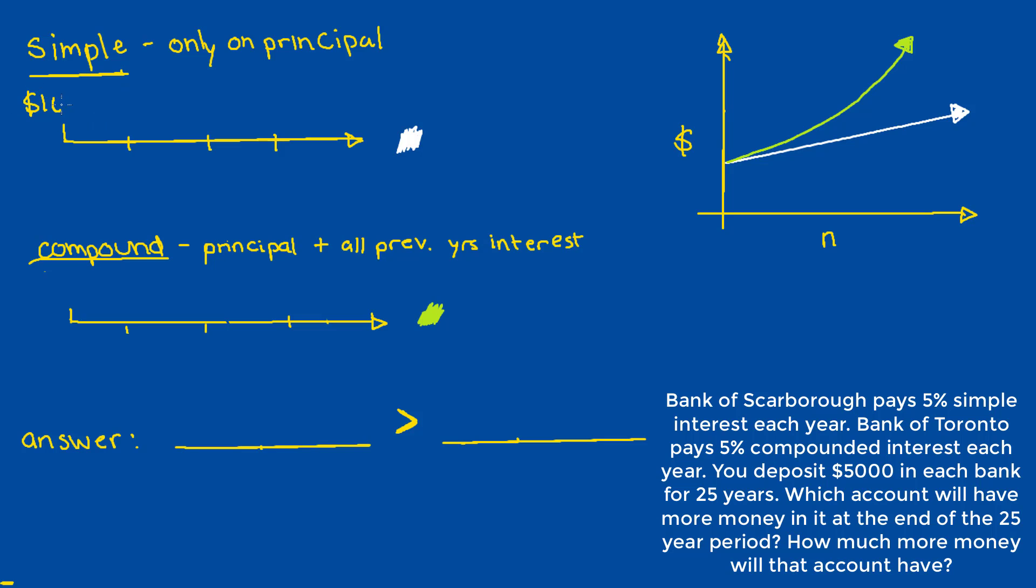So for example, if I were to invest $100 into a simple interest account, which paid out 5% annually, I would get $5 in the first year, and in the second year, and in the third year.